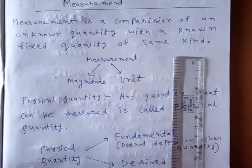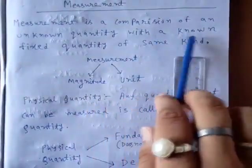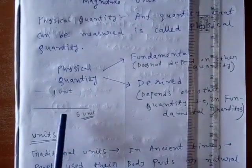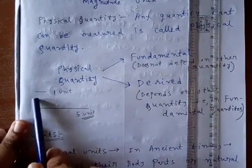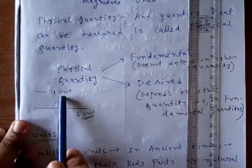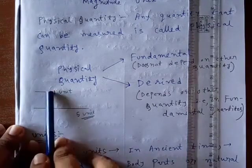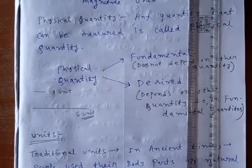Measurement is a comparison between an unknown quantity with a known fixed quantity of same kind. Here, this is the unknown length. And this length I know, I can call this length 1 unit. So by comparing this line with this line I can tell this is 5 unit.